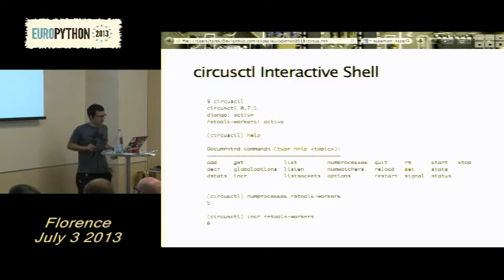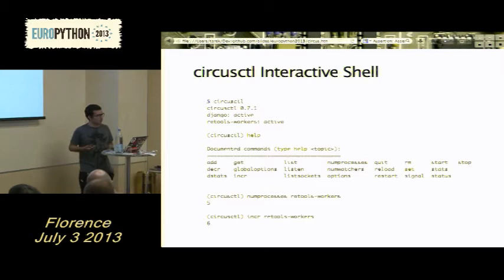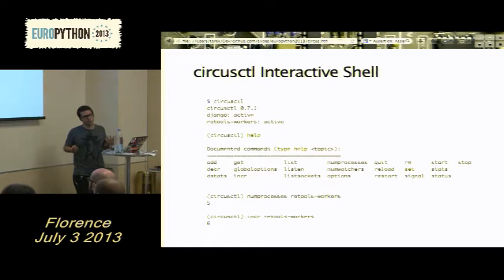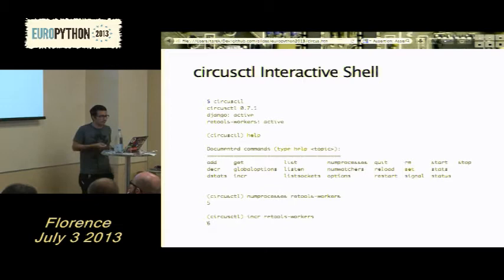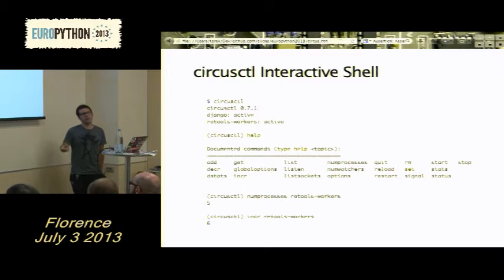CircusCTL provides an interactive shell with many commands: you can add or remove processes, get stats, get all options, or create a whole new process from the command line on the fly. You can also do it using Python APIs. You can send signals to processes, and the CircusCTL shell can be run from wherever you want — you just specify which CircusD you want to talk to, whether local or remote.